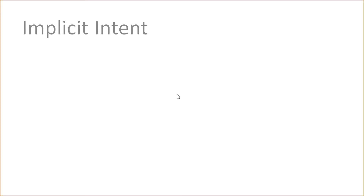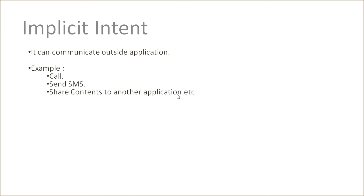Next, implicit intent. Implicit intent can communicate outside our application. That means inside our Android mobile we have multiple applications installed in our OS, and we can communicate with multiple applications from our application. Suppose inside our OS we have WhatsApp, Facebook, and any other application — we can communicate between them. For example: making a call, sending an SMS, or sharing content to another application.